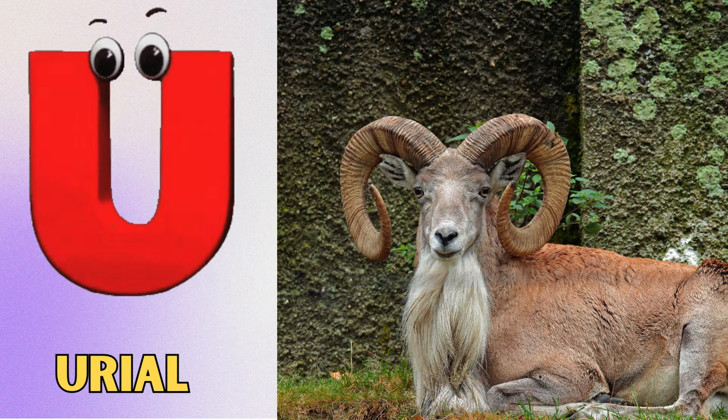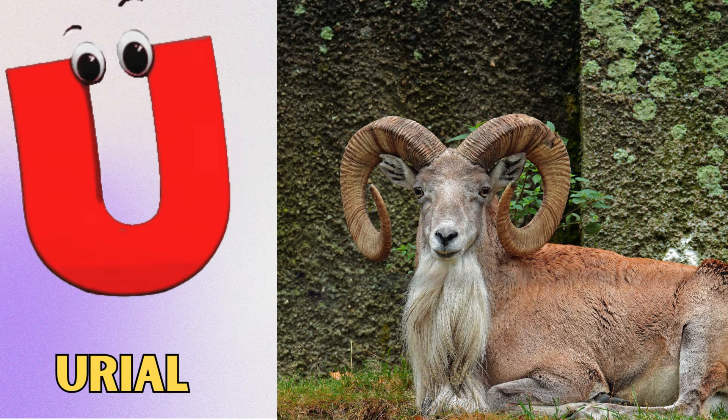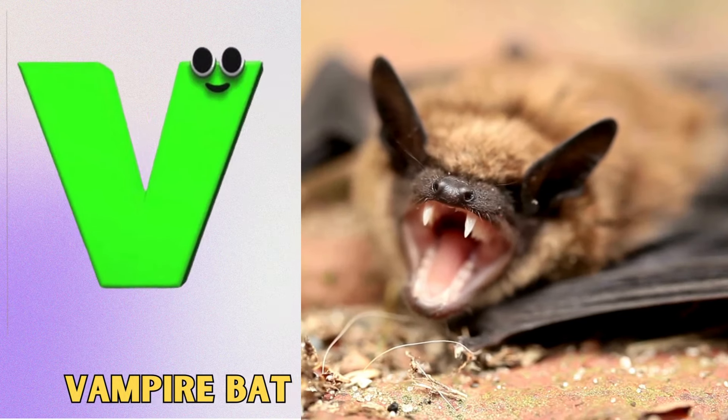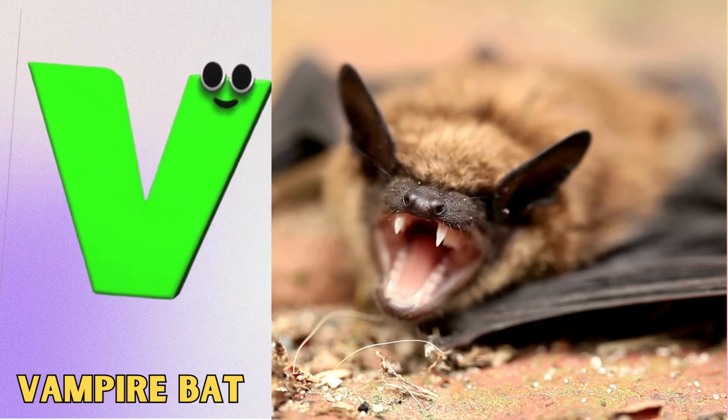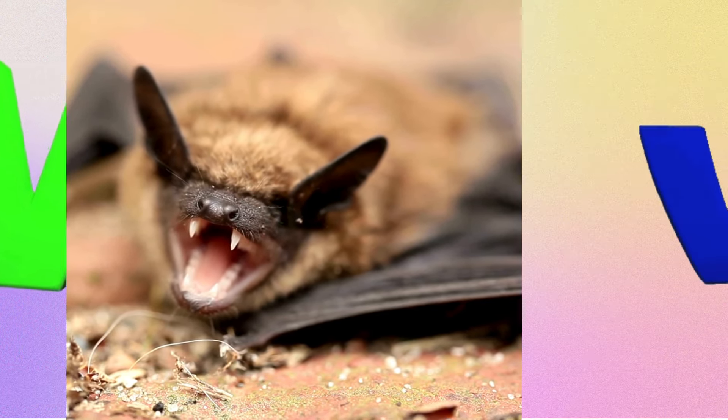U is for uriel. Ah, ah, uriel. V is for vampire bat. V, v, vampire bat.